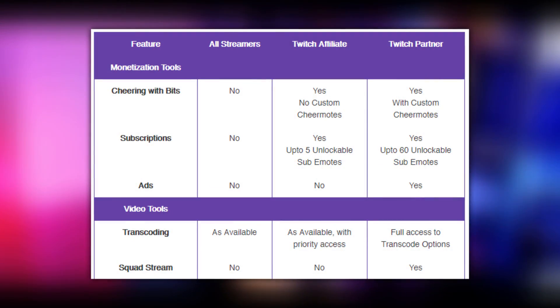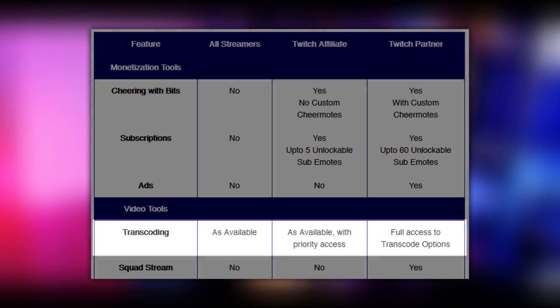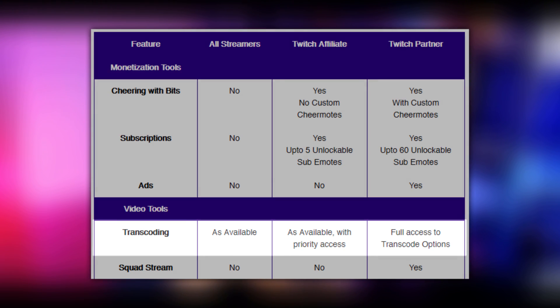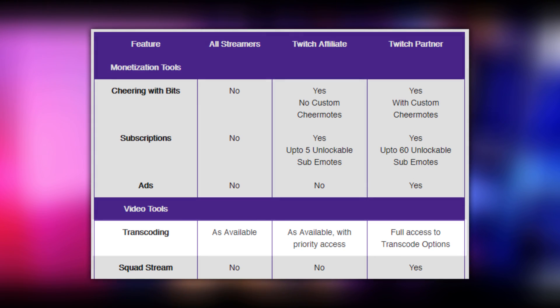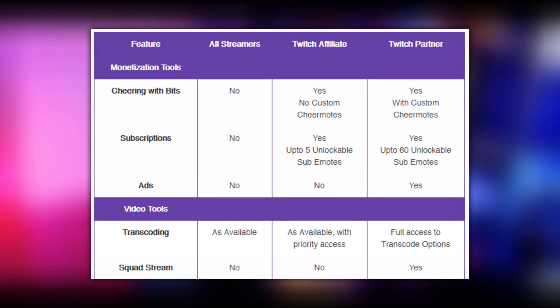If you just want a five-second explanation: partnered streamers are always going to get transcoding options. If you're not partnered, you still have a chance to get transcoding options, but you're going to be placed on an algorithm that determines whether or not you get them.